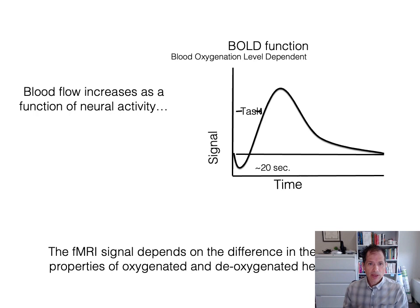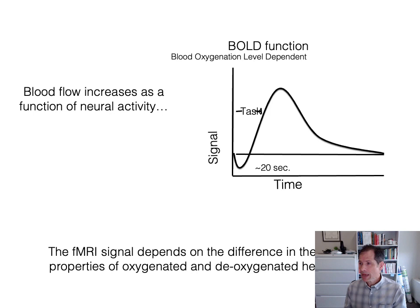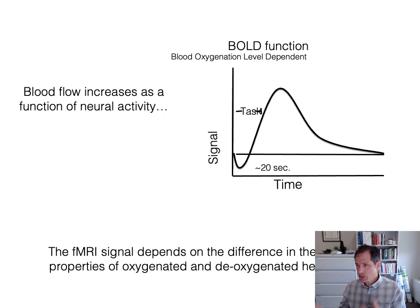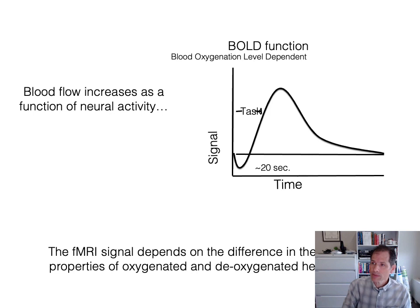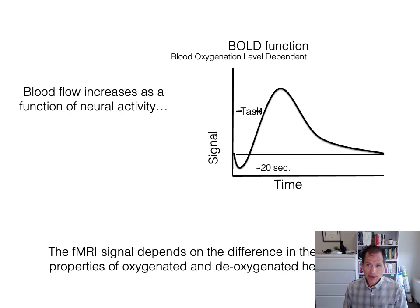The BOLD function stands for blood oxygenation level dependent. Blood flow increases as a function of neural activity. When the circulatory system is operating, it carries oxygen to cells that need it and leaves those areas with carbon dioxide — it goes in red and comes out a little bit blue. Oxygen-rich blood flows to an area, the oxygen is taken out by cells, and then the blood returns to the heart oxygen-depleted. It turns out that the difference between oxygenated and deoxygenated hemoglobin changes the magnetic field, and that can be measured by a very powerful magnet.